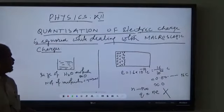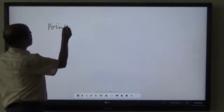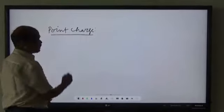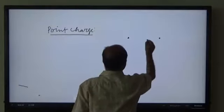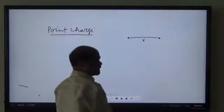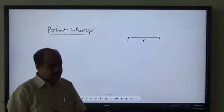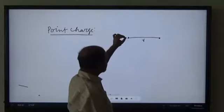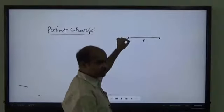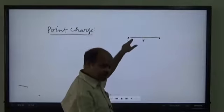Now I will go to another topic: point charge. What is a point charge? Suppose this is a charged body and this is another similar charged body. Their size is negligibly small as compared to the distance separating them. Then the charged bodies are said to be point charge bodies, or simply point charges.